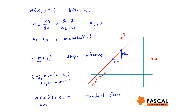In standard form, the slope is minus a over b, the x-intercept is (minus c over a, 0), and the y-intercept is (0, minus c over b).